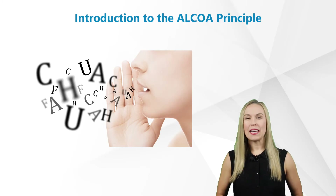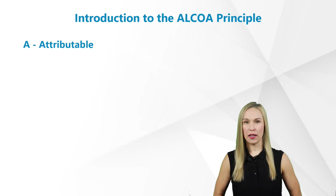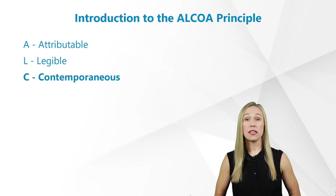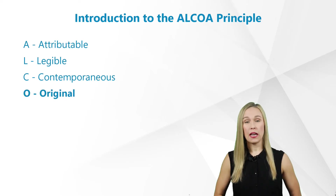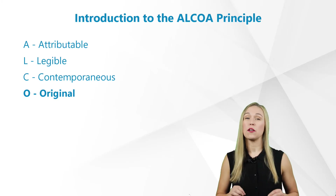Let's break down the ALCOA-C acronym and what each letter stands for. A: Attributable — who created and edited the document? L: Legible — the ability to read the data recorded and the signatures can be identified. C: Contemporaneous — information should be written down as source data as it is happening. O: Original — it must not be a copy of an original document like a hand-signed document. Electronic system software must also be enabled to show the location the data was first entered, making this the original origin.